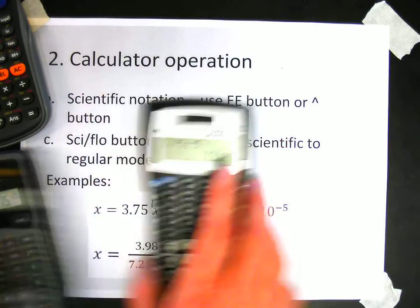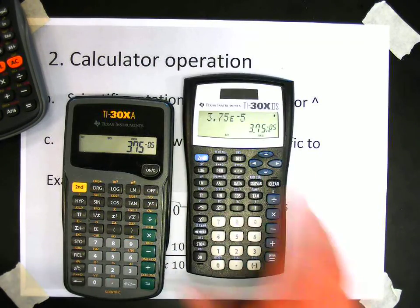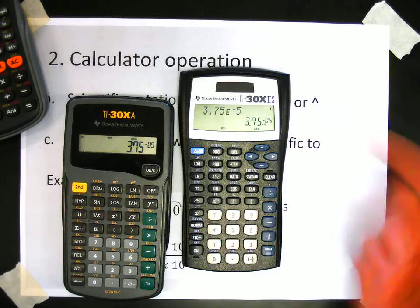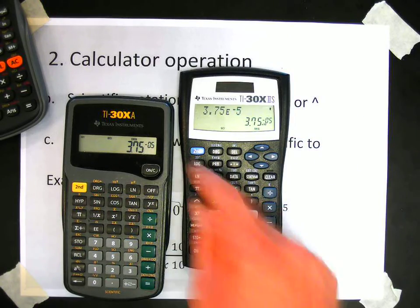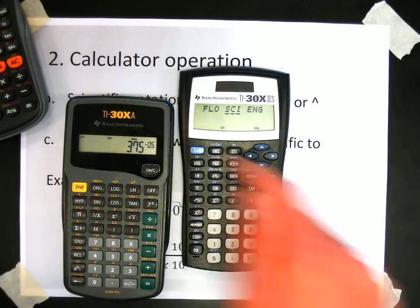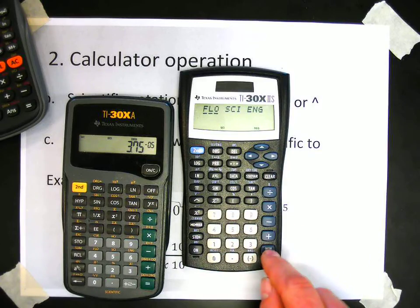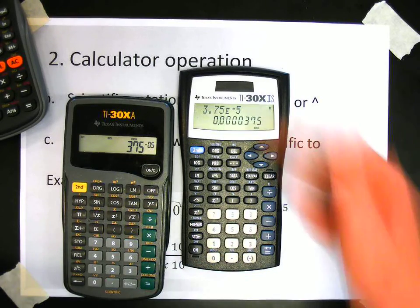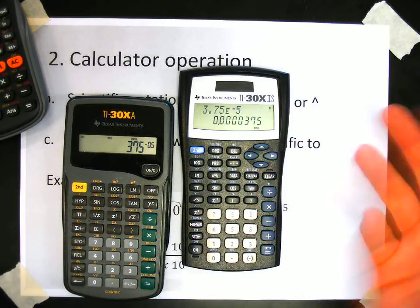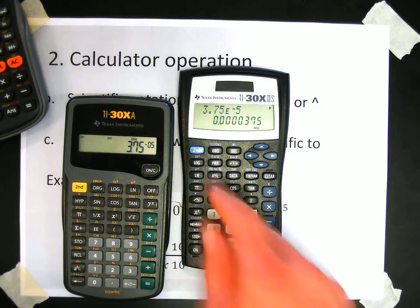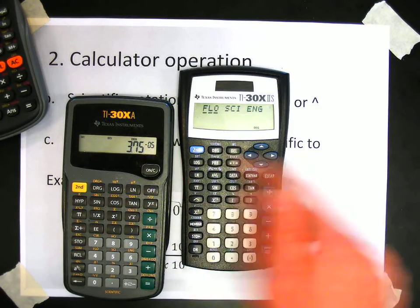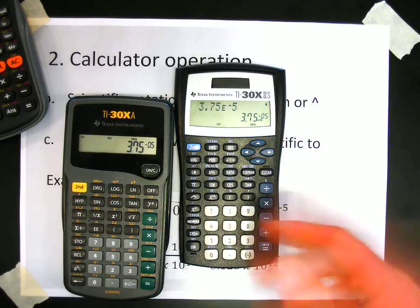So on this calculator here, if I wanted to put this one into the regular mode, I could press 2nd and then access the menu and arrow over to FLO. And there we go. So now it's switched it back into the standard notation. 2nd SCI, arrow over SCI goes back into regular mode.